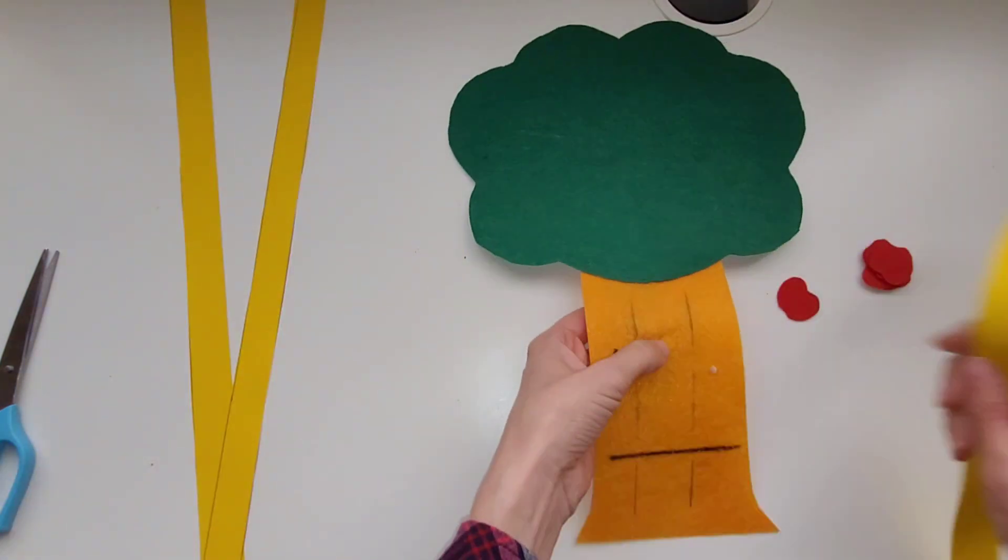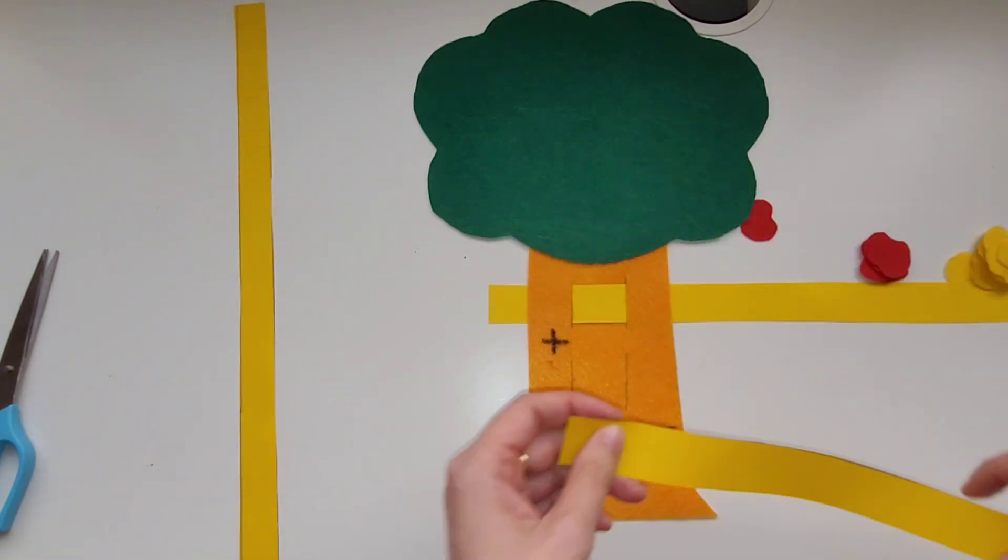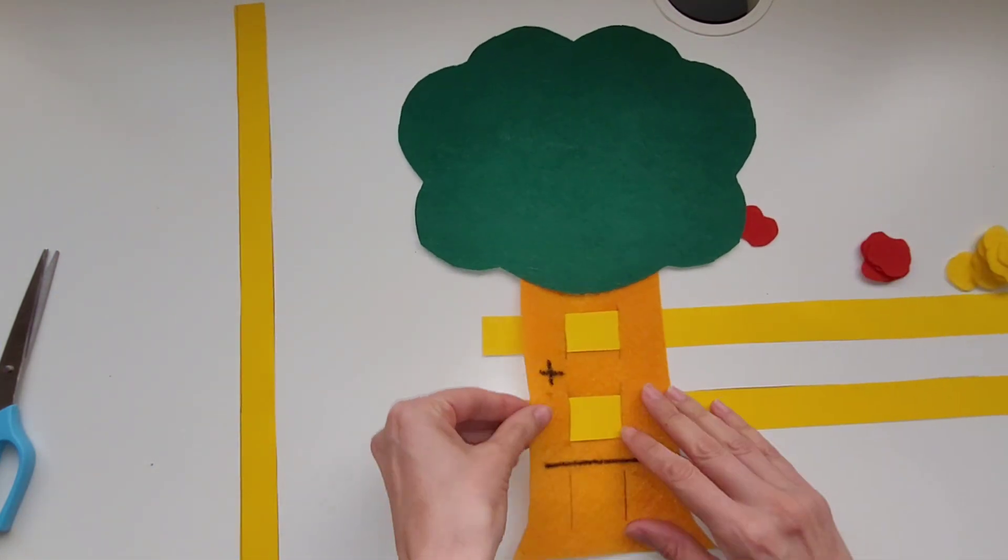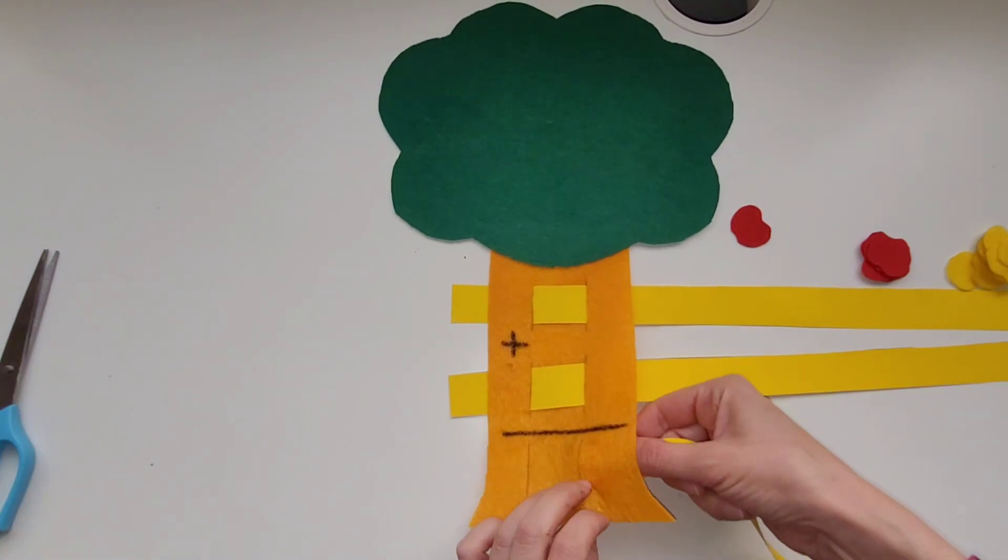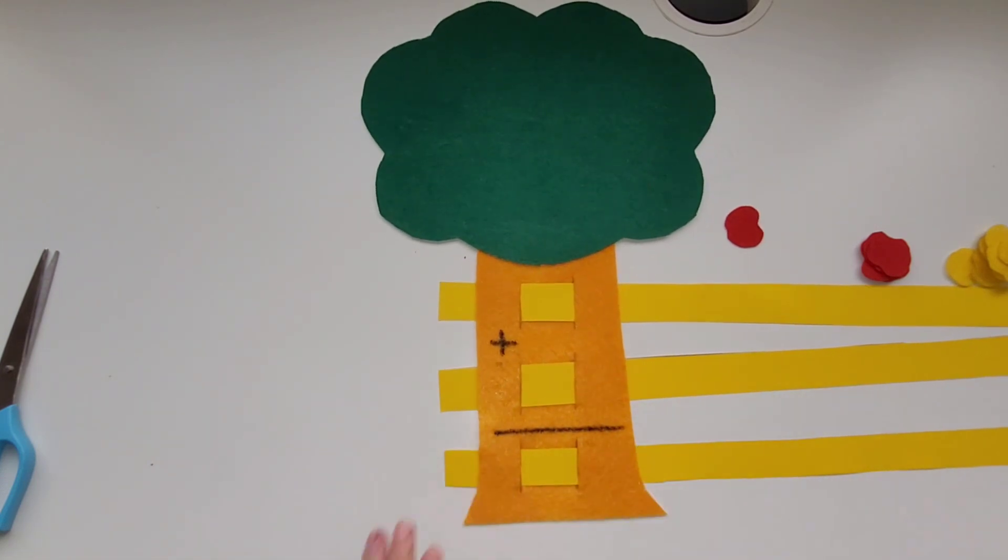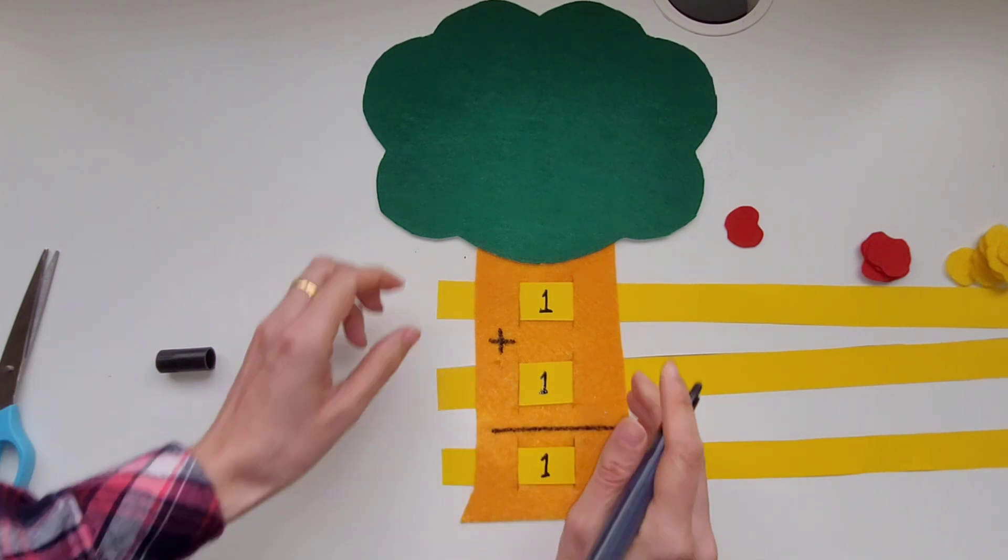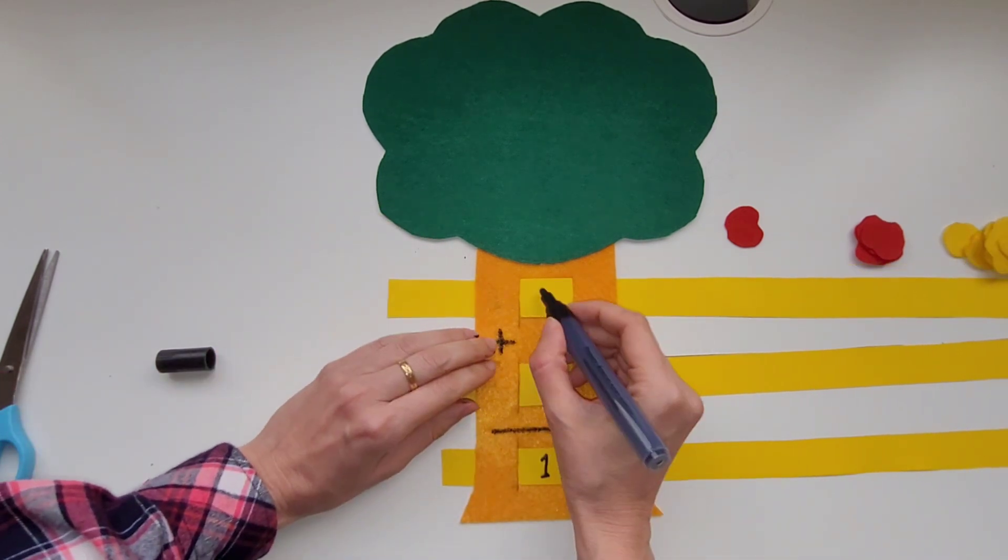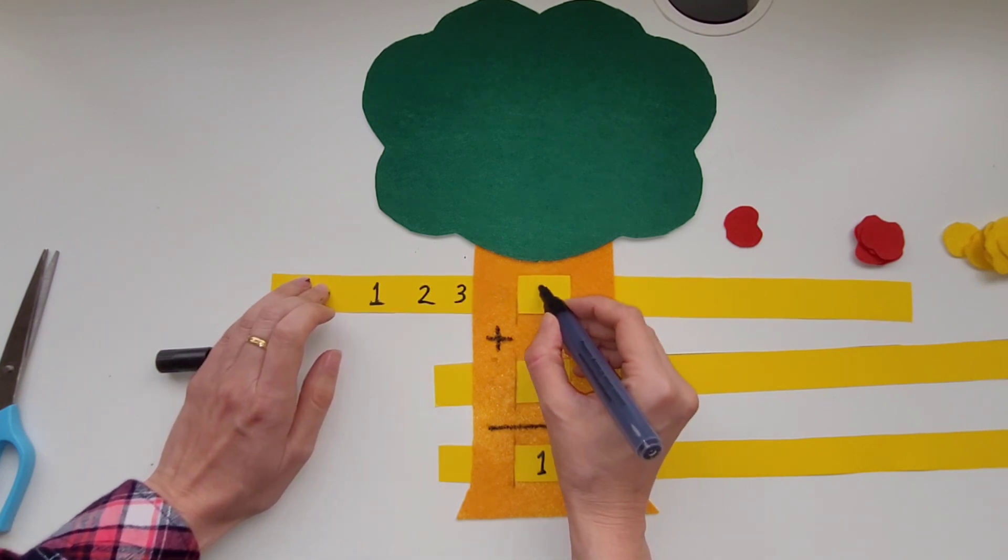I'm going to thread the pieces of paper into the tree trunk like this. Once I have all three pieces of paper in I can start by writing the numbers. I'm going to write one number so that it shows in the square and then I'm going to pull out the paper each time adding a number. I can number these long strips all the way from one to ten or more.